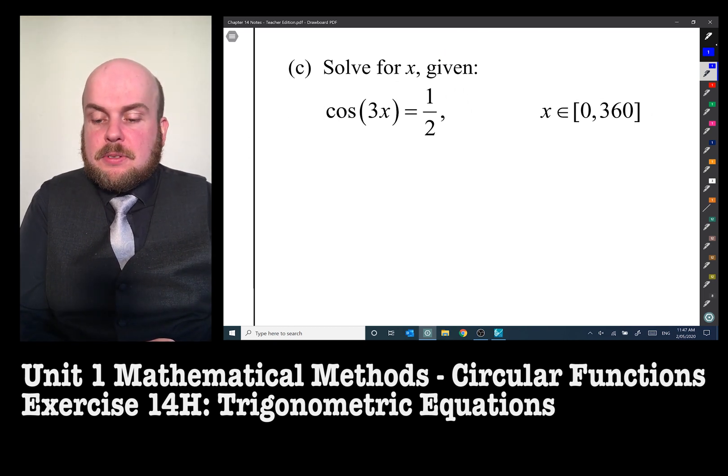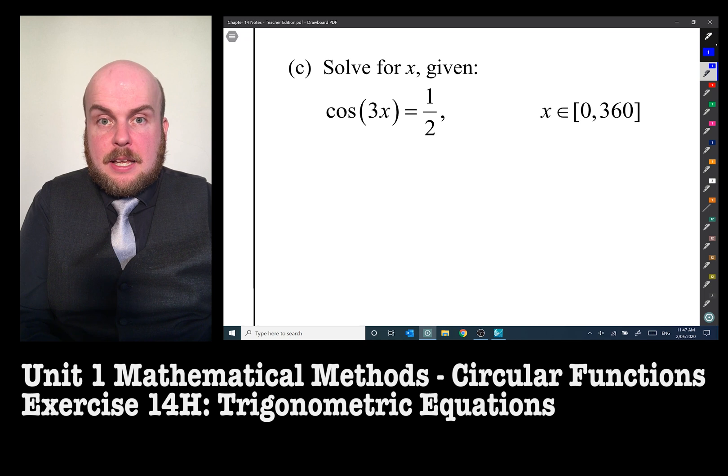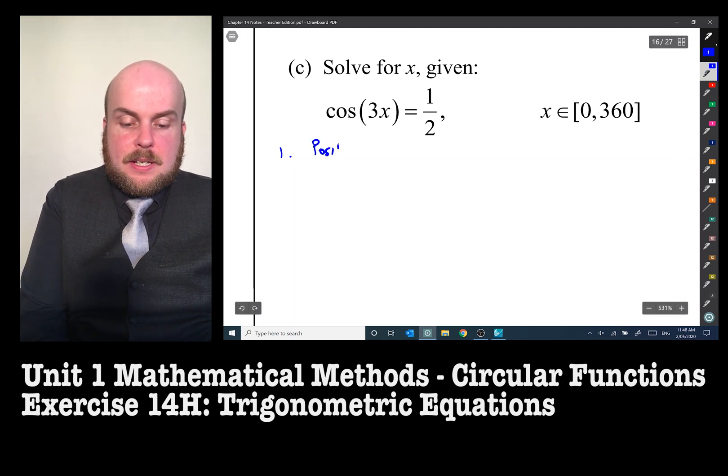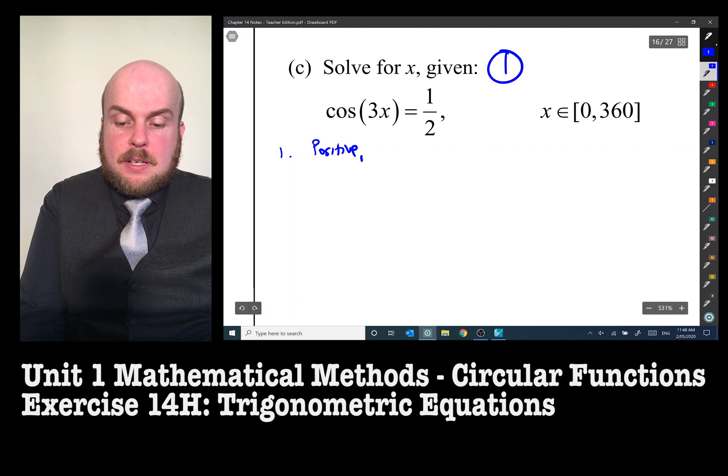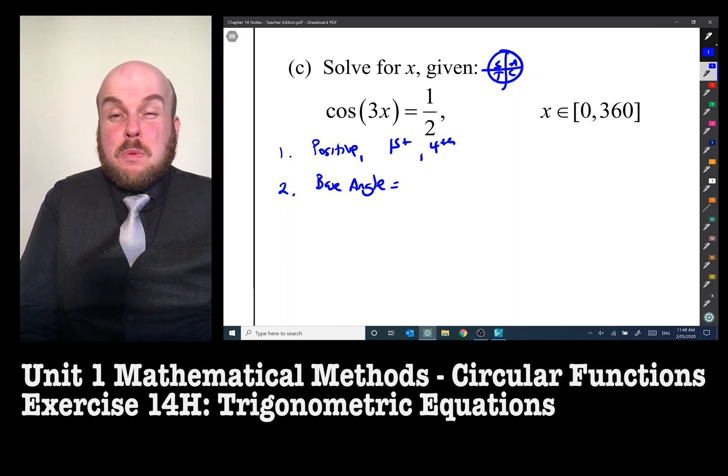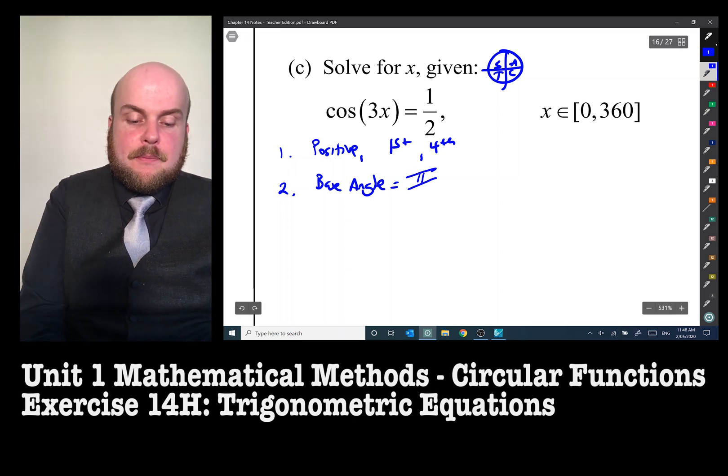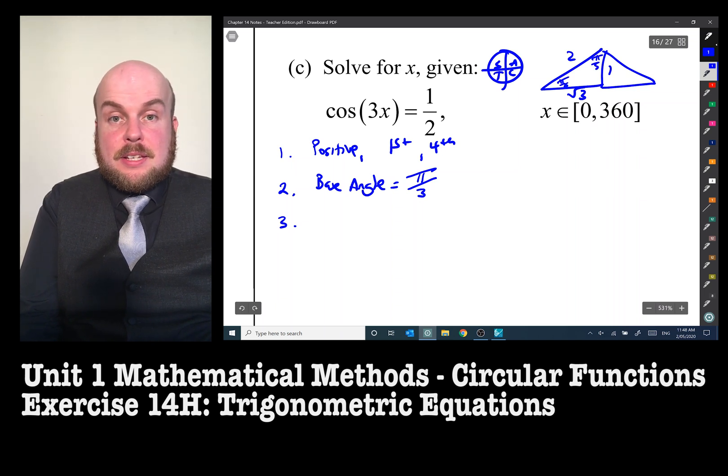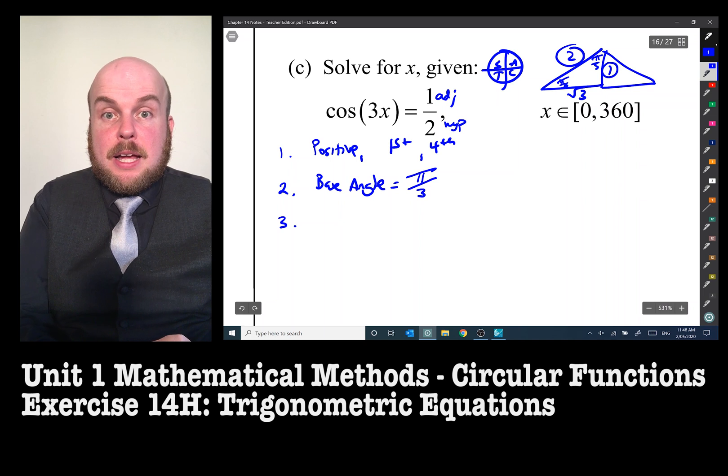Solve for x given cos 3x is equal to one half, x is between zero and 360. So this one is in degrees. First of all, is our answer positive or negative? It's a positive. So when is cos positive? Well, it will be the first and fourth quadrants. And so what's the base angle? Well, according to my exact values triangle, what value of cos will get me one half? Well, that's going to be pi on three. How did I know that? My exact values triangle. Cos is adjacent over hypotenuse. So it's one over two. So adjacent hypotenuse. And that's how I can use my exact values triangle.